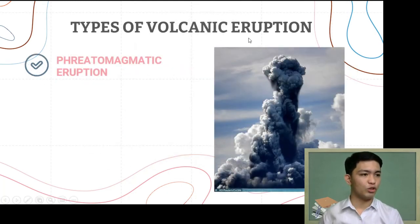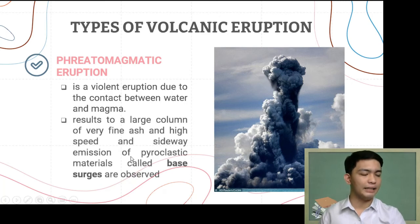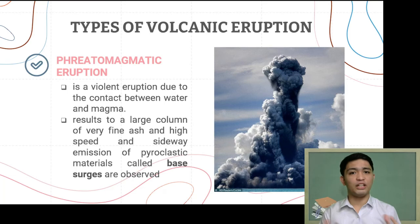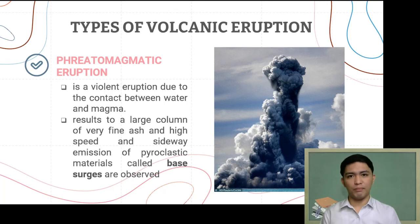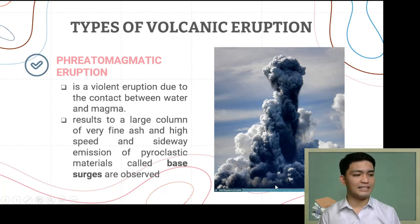The second type is phreatomagmatic eruption. This is still somewhat similar to phreatic eruption — it results from the violent contact between water and magma, resulting in a large column of very fine ash and high-speed sideways emission of pyroclastic material called base surge. The main difference is that phreatomagmatic eruption often occurs in submarine volcanoes — underwater volcanoes — where magma comes into contact with surrounding water, forming large columns of gases and ash.